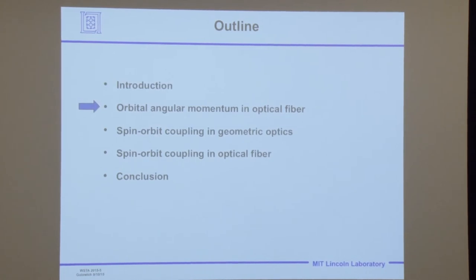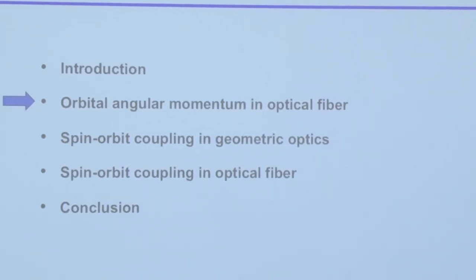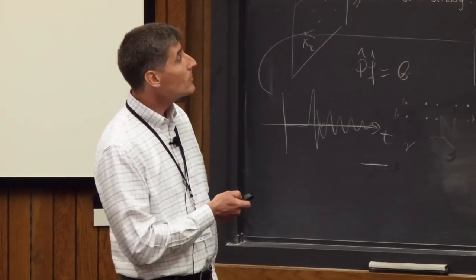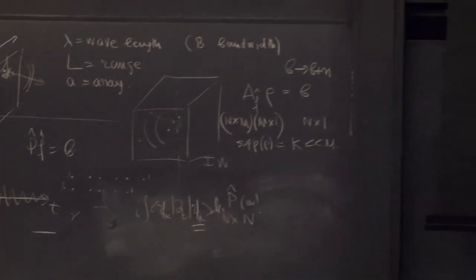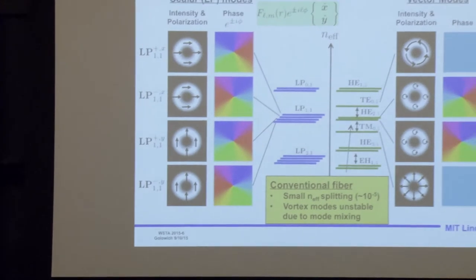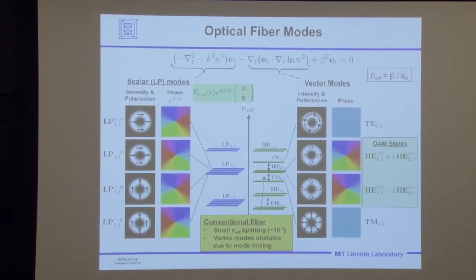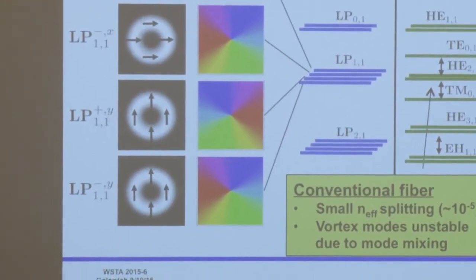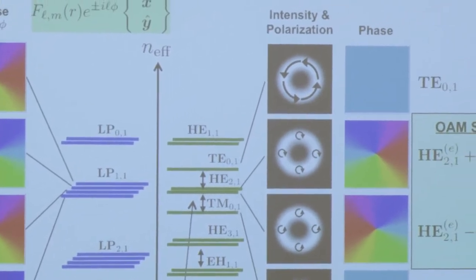Now a lightning review of optical fiber modes. Looking at Maxwell's equations for the transverse electric field: if we ignore the vector terms, we get the scalar wave equation. The scalar modes split into groups of two or four, called the linearly polarized or LP sets. The fundamental modes are the LP01 — doubly degenerate — and the excited states LP11, LP21, etc. are fourfold degenerate. The first index is the angular index, the second is the radial index.